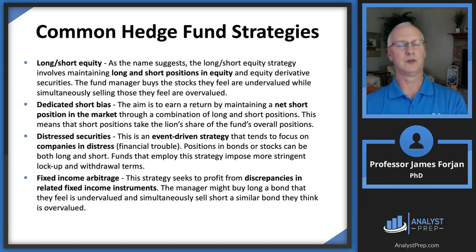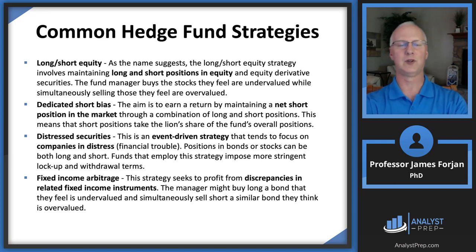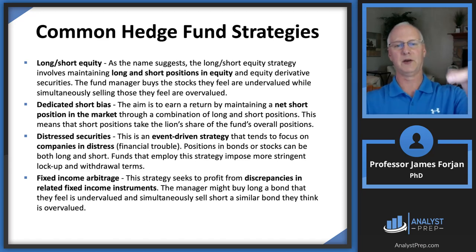Fixed income arbitrage involves taking a long position in one bond and a short position in another similar bond — perhaps in the same subsector or with high correlations. The goal is to benefit when those prices diverge: you profit from the short position falling and the long position rising.